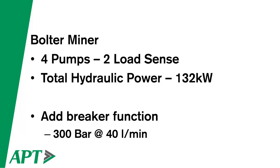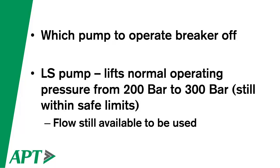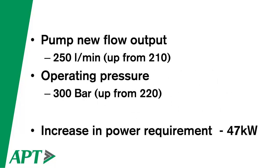Normal power requirements for the system as previously installed was 90 kilowatts — so out of our 132 kilowatts, we should have had power to spare. The decision on which pump to operate the breaker off was critical. The load sense pump normally operates at 200 bar; we decided to put the breaker on the load sense pump, moving the normal operating pressure from 200 bar to 300 bar — still within safe limits. The pump's new flow output goes to 250 litres a minute, up from 210. But the key point is that operating pressure goes from 220 to 300 bar, an increase in power requirement of 47 kilowatts — more than double the actual power required for the breaker function, and more than is available for the machine itself.